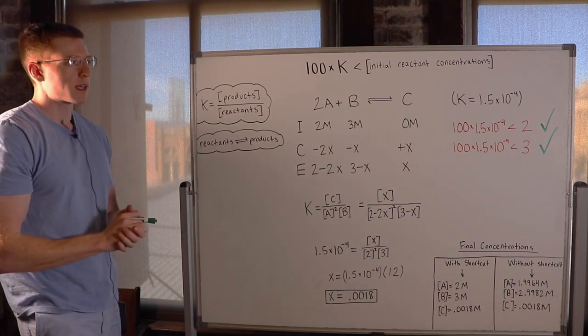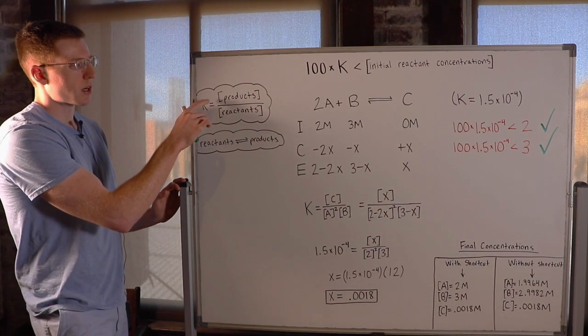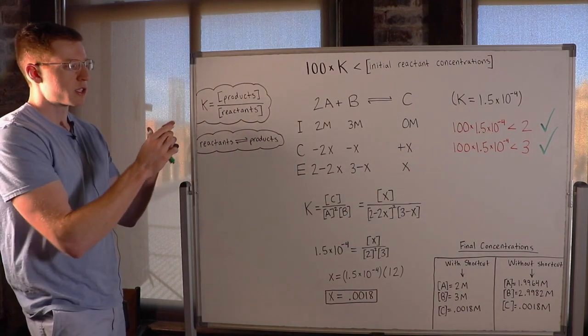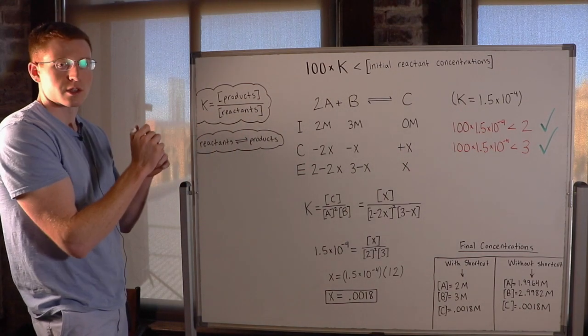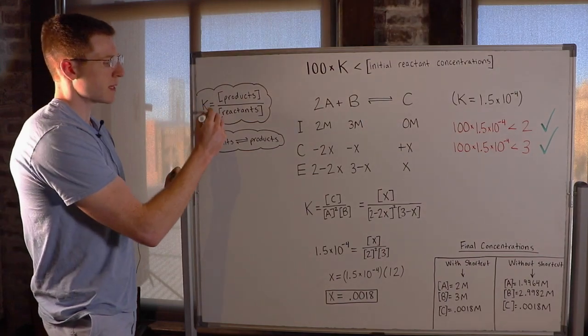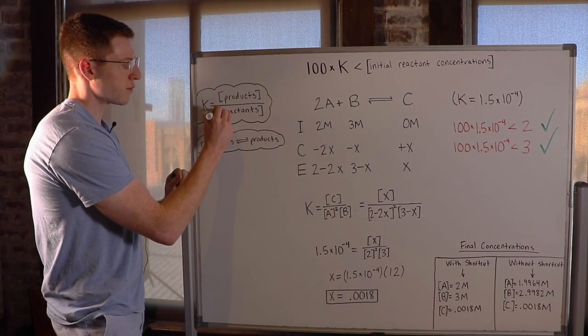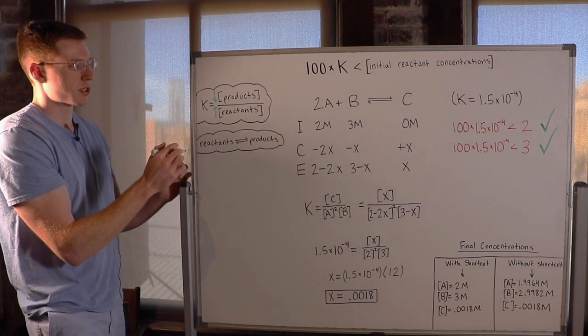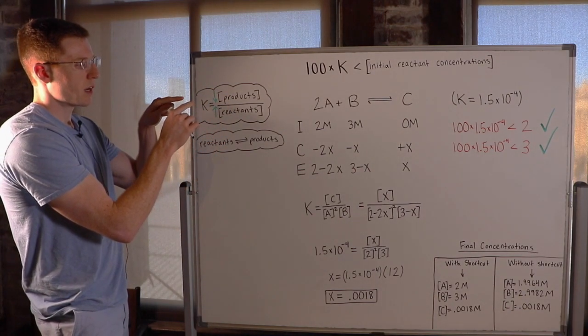So think about what K actually means. It's the concentration of our products over the concentration of our reactants in general. So if we have a very small K and the shortcut rule applies, that means our reactants are very big in concentration and our products are very small in concentration. Those are the two ways that you can create a small K.